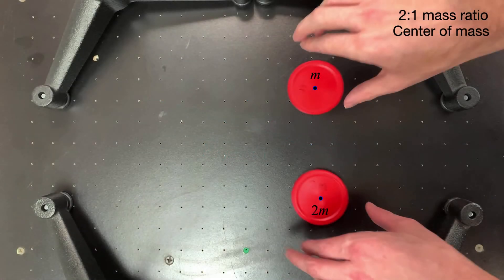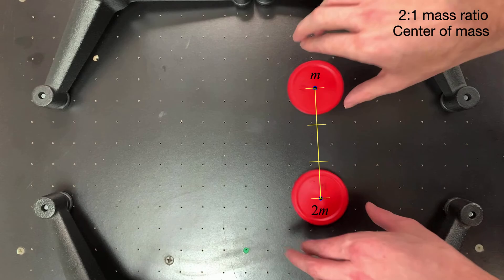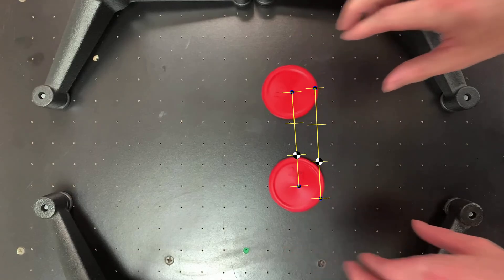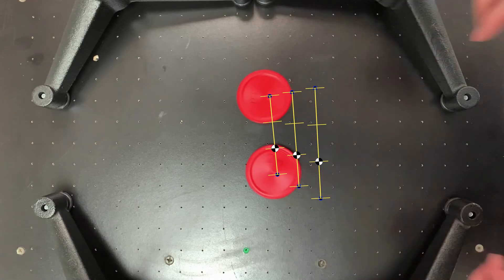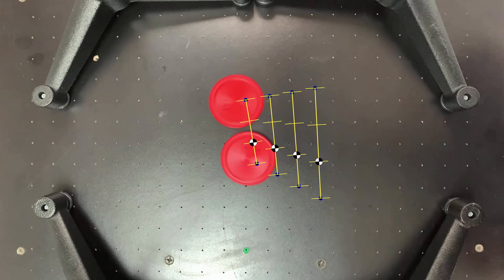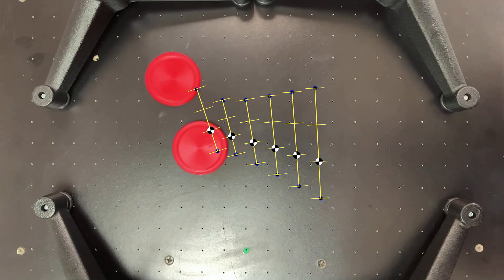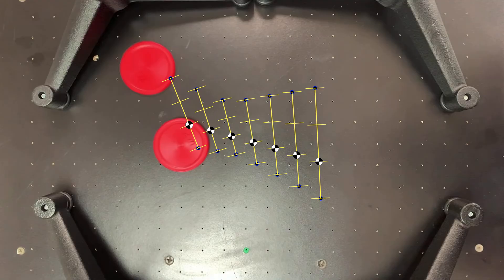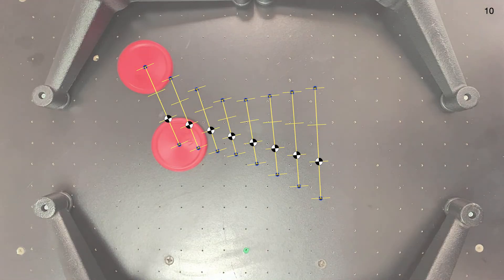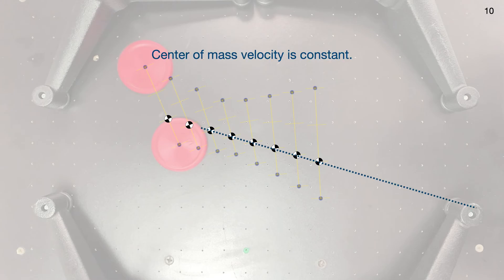And how about the center of mass of this system? It's located two-thirds the distance from the small mass to the big mass. We'll use this handy measuring tool segmented into three equal length parts. The center of mass is down here. And once again we see that the center of mass velocity is constant.